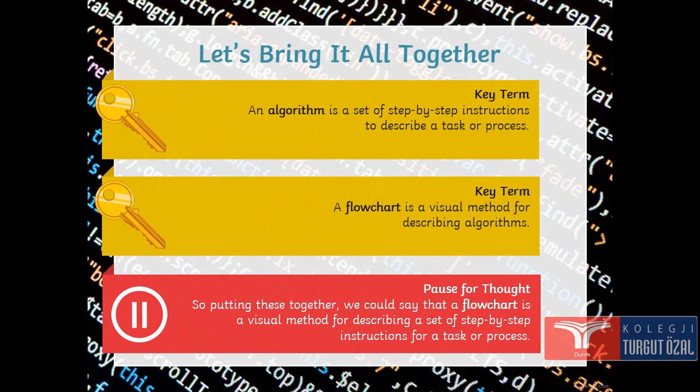Let's bring it all together now. An algorithm is a set of step-by-step instructions to describe a task or a process. A flow chart is a visual method for describing algorithm, a set of step-by-step instructions for a task or a process.